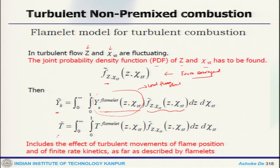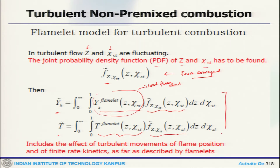Similarly, mean temperature can be found using the local variable T and the PDF function. This includes the effect of turbulent movement, flame position, and finite rate kinetics — everything. That is how you obtain the mean quantities.